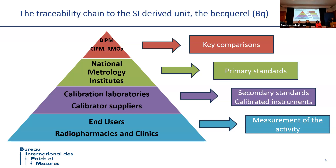Both of them need to be traceable to a primary standard maintained by a national metrology institute. National metrology institutes have the responsibility to realize the unit becquerel. And at the top, at the international level, the BIPM, the CIPM and the regional metrology organizations are here to coordinate this effort and to ensure that we have good equivalence of all the becquerels that are realized around the world. Key comparison is a tool to assess this.